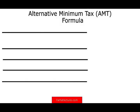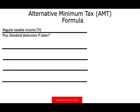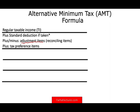So let's review real quick what we learned in the prior session. For the AMT we'll start with regular income tax. We add to the standard deduction — if the standard deduction is taken then we have adjustments and preferences. We look at certain adjustments, then we add the preferences. Today we're going to cover up to the point of alternative minimum taxable income before exemptions.